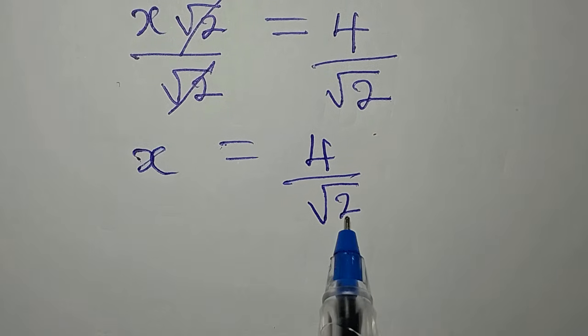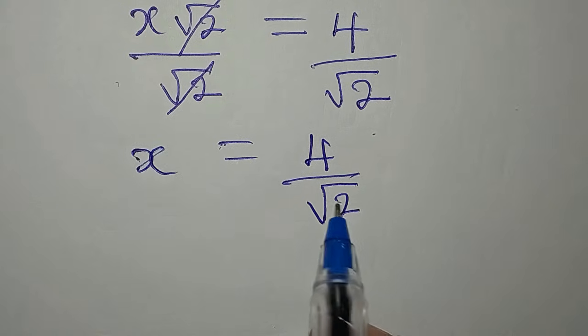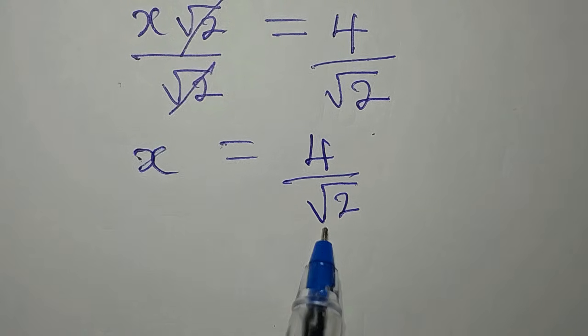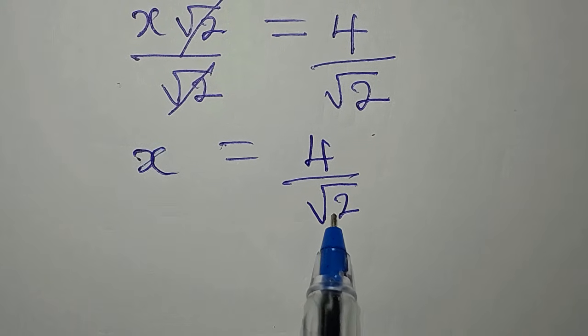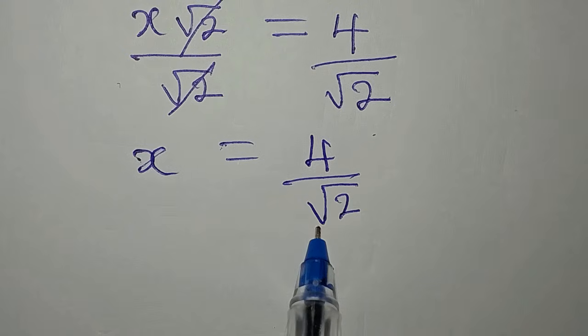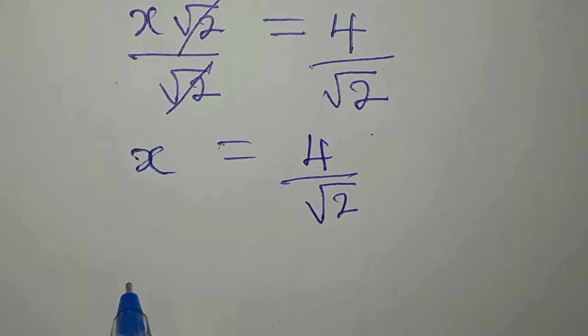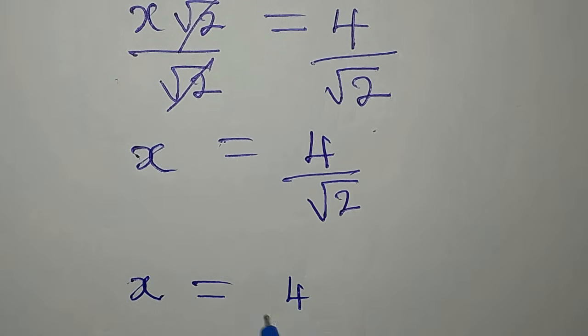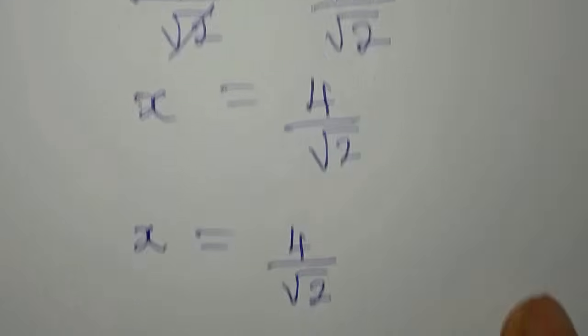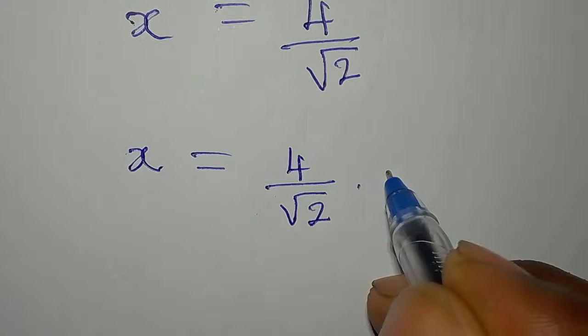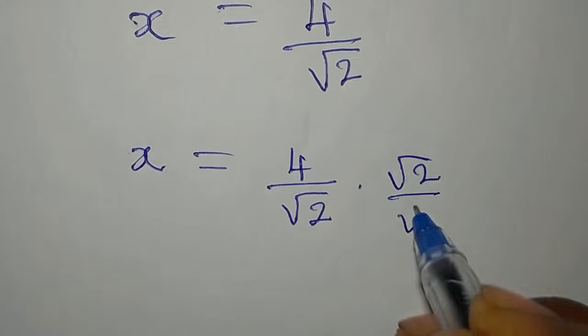But then, we can rationalize what we have here. To rationalize is to remove this non-rational number as the denominator. We need to remove it from here. So we have x equals 4 over root 2 multiplied by root 2 over root 2.